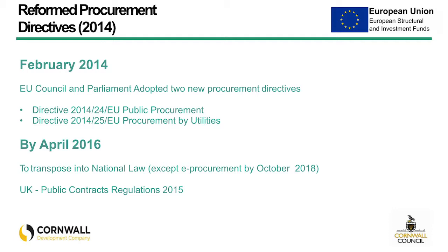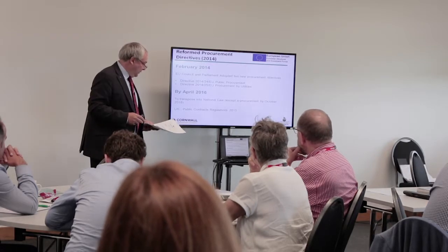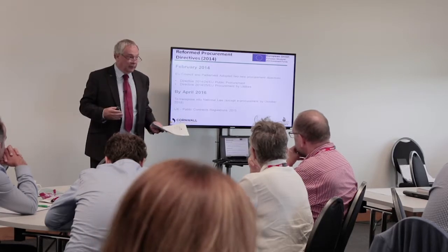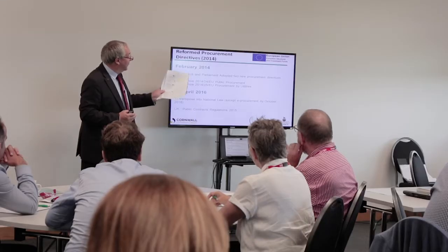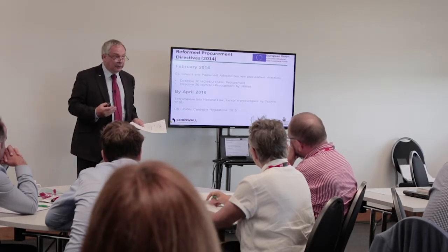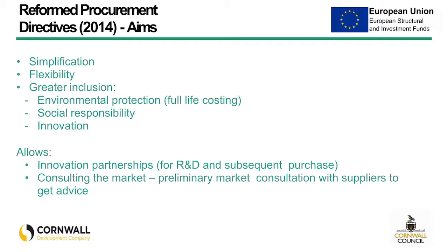In February 2014, the European Council and the Parliament approved two new procurement directives. We're only really interested, for the purposes of this seminar, in the first one: EU Public Procurement Directive 2014/24 — that is the EU procurement law. It required all member states to transpose the procurement directive into national member state law. You'll find something called the UK Public Contracts Regulations 2015. If you compare that with the directive, you'll find it is identical because it is a transposition of the EU procurement directive into UK law.